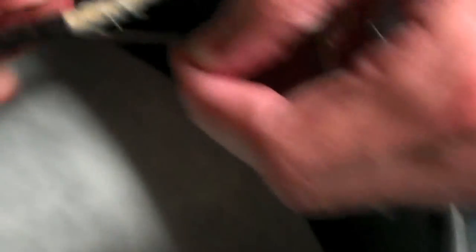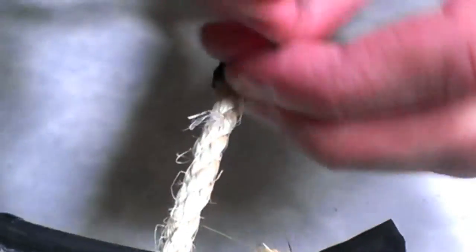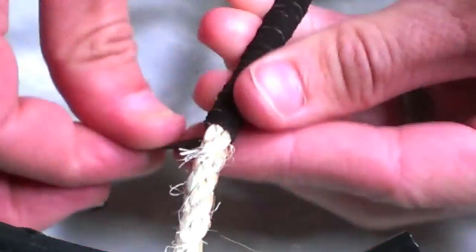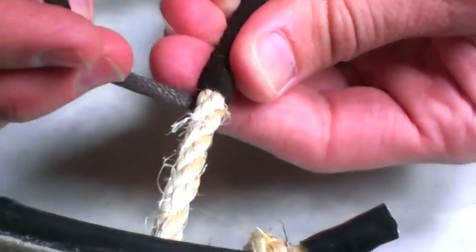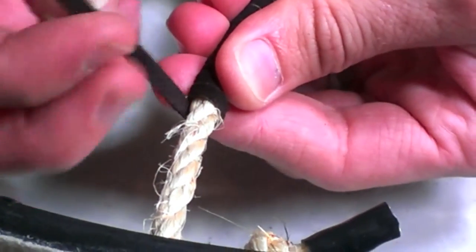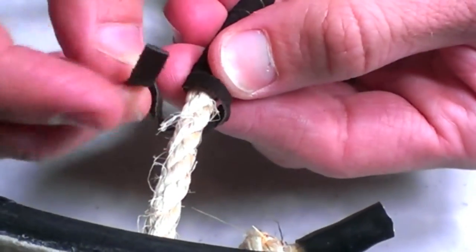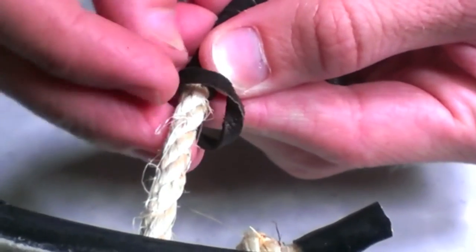Once you get about this much or so left, you want to go ahead and tie it off. When I do two knots, just kind of hold this so it doesn't unravel past the point where you're going to tie the knot.